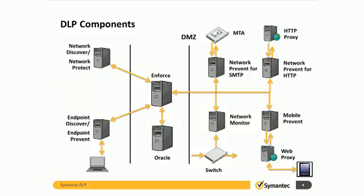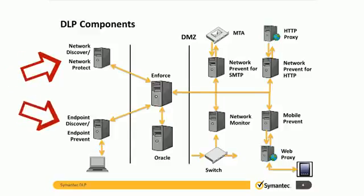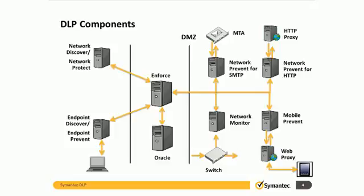Here we see a basic overview of the DLP architecture. The middle section is comprised of the DLP management components, the Enforce Console, and Oracle database. The servers on the left represent detection servers used to scan designated network devices inside the corporate LAN — these are typically scheduled events. The servers on the right represent detection servers that receive traffic from other network devices and modify the data as needed before it leaves the environment.